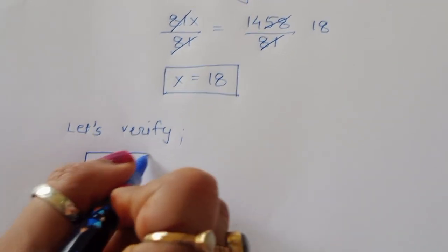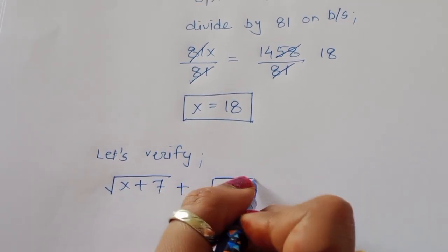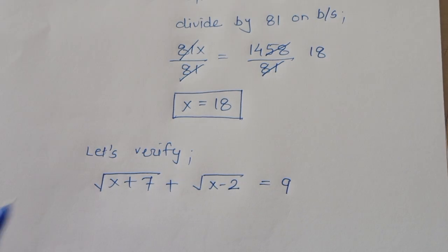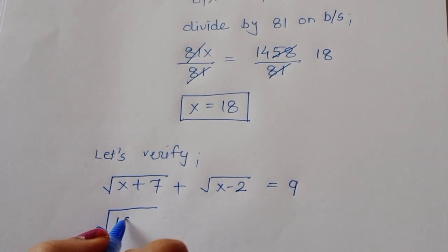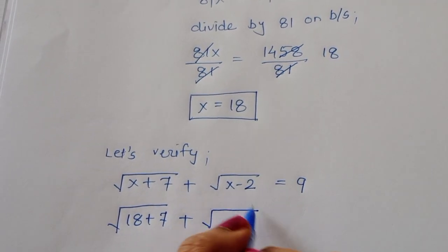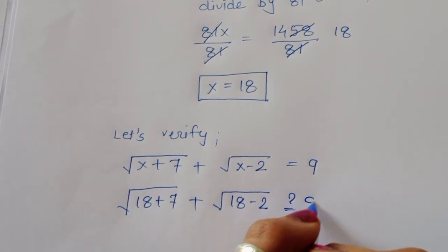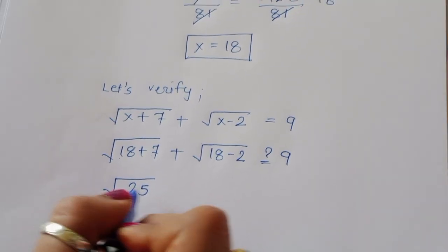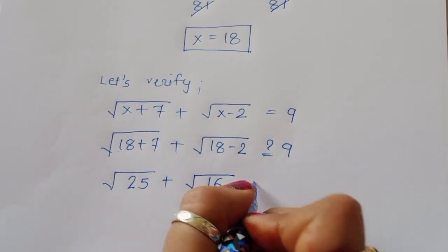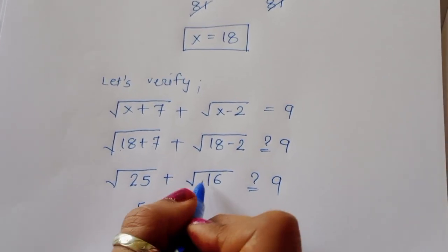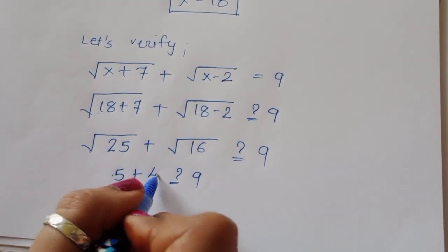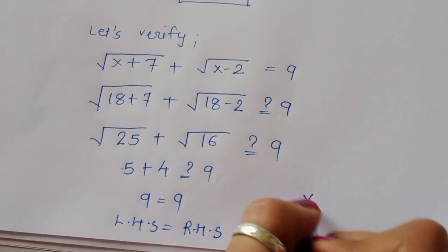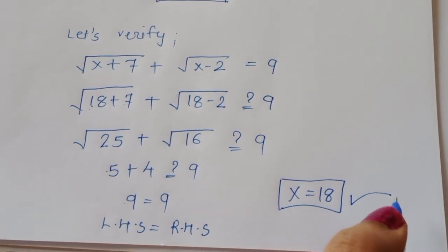Our question is √(x+7) + √(x-2) = 9. Substituting x = 18: √(18+7) + √(18-2) = √25 + √16 = 5 + 4 = 9. LHS equals RHS, so x = 18 is the correct and verified solution.